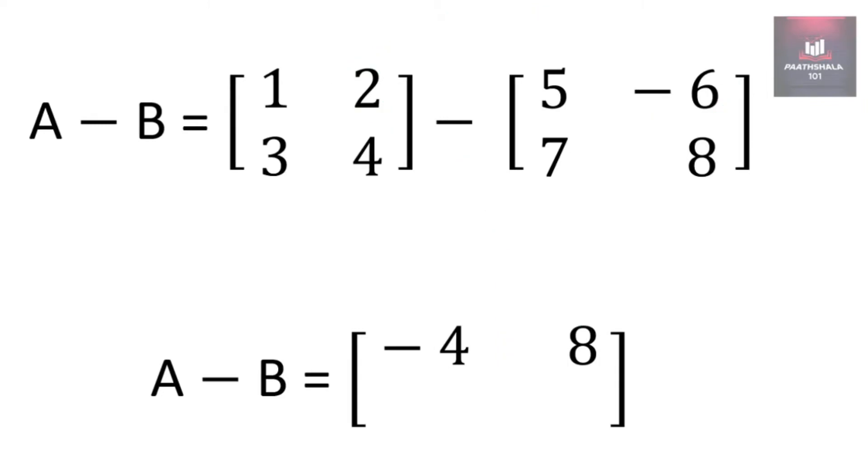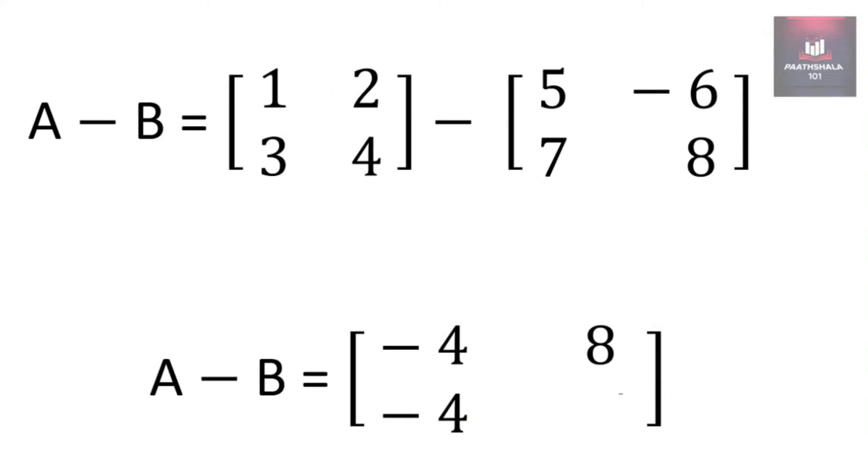For second row, first column of A minus B, we will select second row, first column of A and second row, second column of B, that is 4 and 8. 4 minus 8 is minus 4.